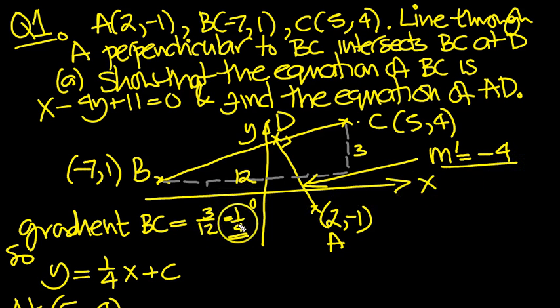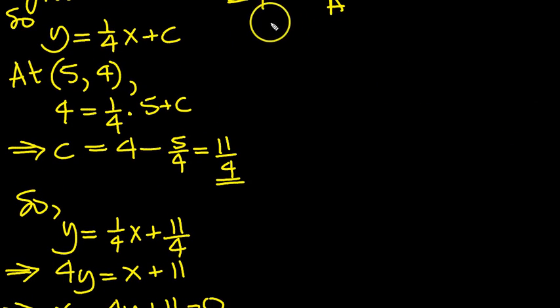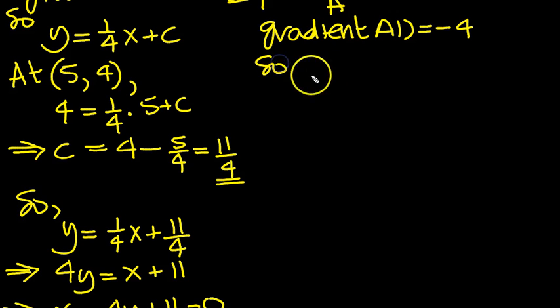Okay, and we worked it out because we knew 4 times -4, a quarter times -4 is -1, because of the property of perpendicularity. Okay then, now we know the gradient, and we know it goes through 2, -1, we can work out the equation of the line. So let's do that then. So gradient AD, let's write that down to be absolutely clear. And it was A to D, wasn't it, is equal to -4.